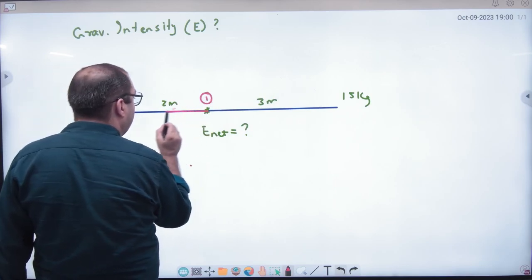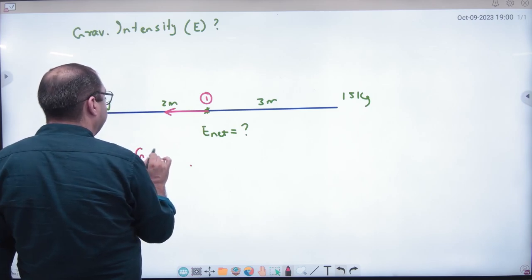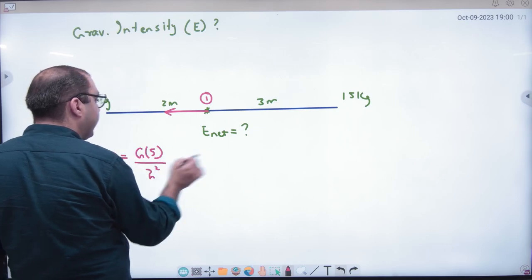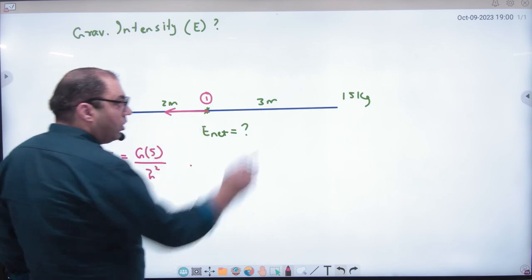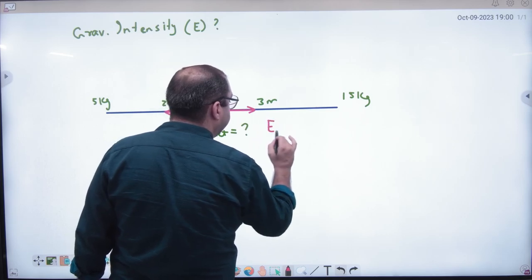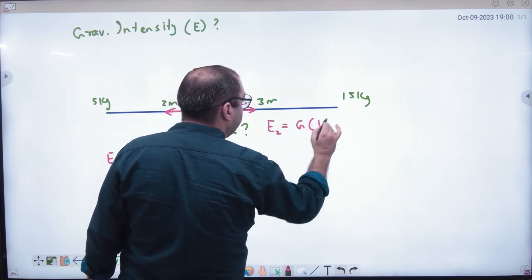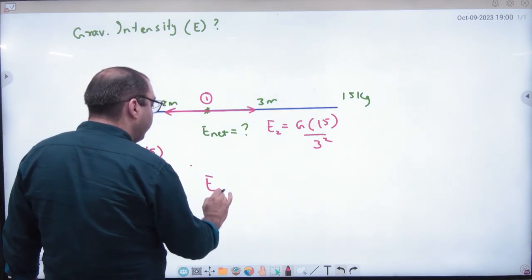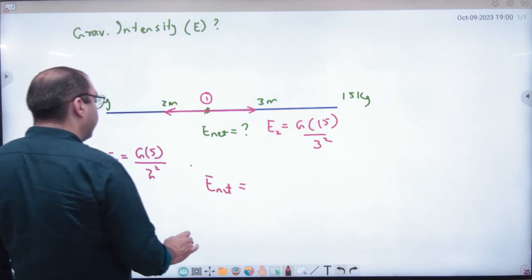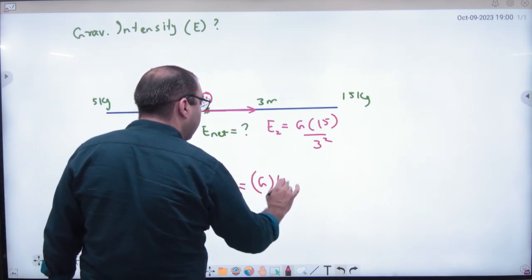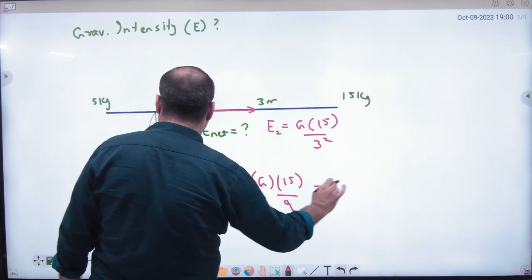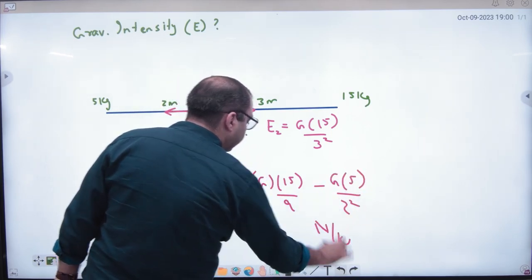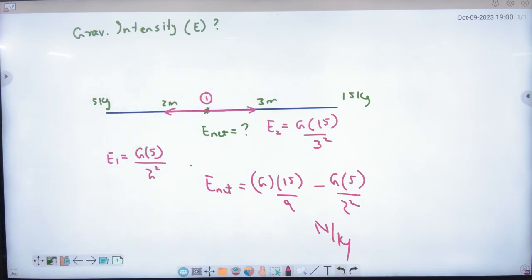So 5 kg will attract this one towards itself. G into 5 divided by 2 square. This E1 value will come towards left. And 15 kg will attract this one. E2 value will be G into 15 divided by 3 square. So the net value of E will be from the bigger value, subtract the smaller value. So whatever answer comes from here, its units will be newton per kg.